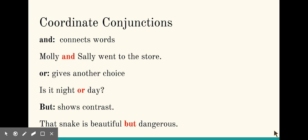Here's some more information about coordinate conjunctions. And is used to connect words - Molly and Sally went to the store. Or gives another choice - is it night or day? But shows contrast - that snake is beautiful but dangerous.